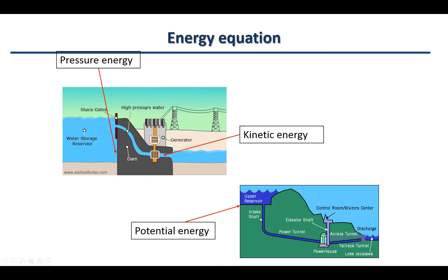Another example: if you have a hill and a reservoir at the upper part of the hill, and by using an intake shaft or pipe the water or flow is released from this side, this kind of energy is potential energy. Once it is released, it is all converted to kinetic energy. That's the first concept.